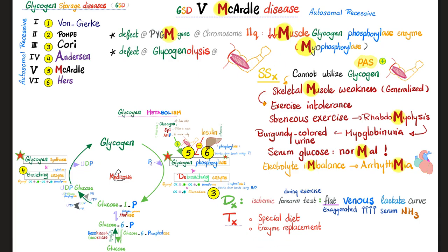Treatment for McArdle disease: try to replace the enzyme, avoid strenuous exercise, and avoid fasting. The mnemonic for McArdle disease — the M mnemonic: missing the muscle glycogen phosphorylase or myophosphorylase, leading to muscle weakness, arrhythmias, and rhabdomyolysis.